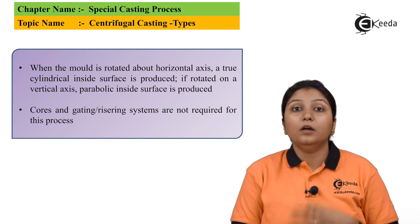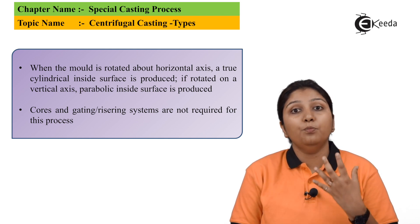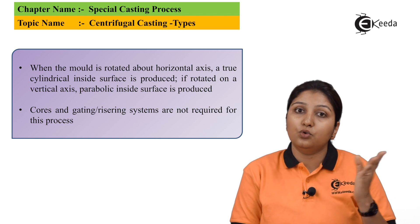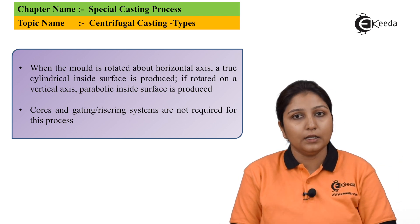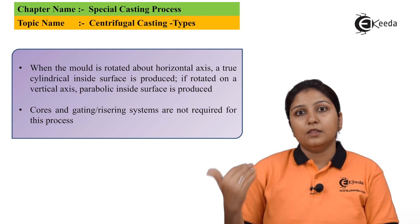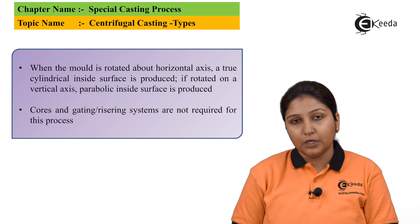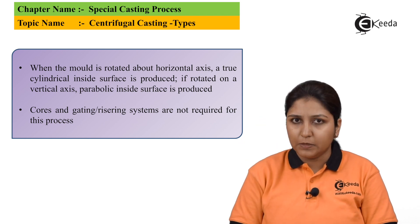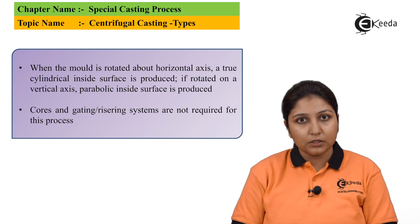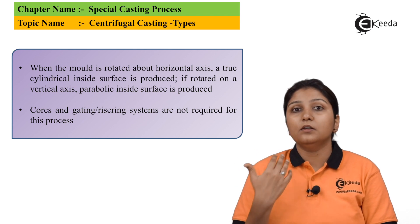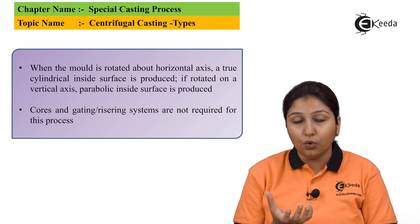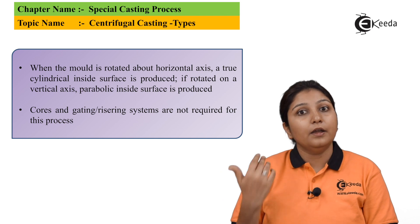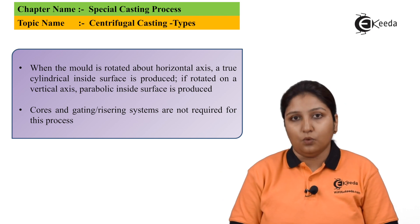In semi-centrifugal casting, you require a core to produce a hollow casting; the rest is the same as true centrifugal casting. You can see there is a flywheel-kind of object, or you can say vertical centrifuging is being done. There is a pouring basin, a hollow tube, and a core. Material is being flown and it occupies the space around the core.